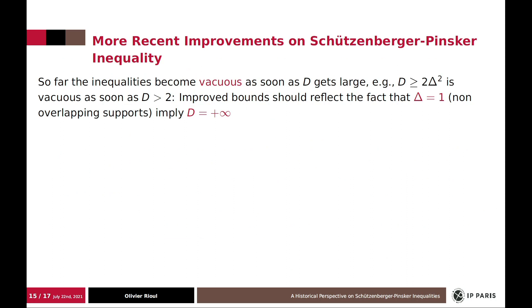Now, what happened next? Well, there were some more recent improvement of Pinsker inequality, which were needed because the classical Pinsker inequality becomes vacuous as soon as D gets large. The reason for this is that when delta approaches one, then D should necessarily go to plus infinity. And therefore, if we have a good Pinsker inequality, we should also have this situation, which should also reflect that property.